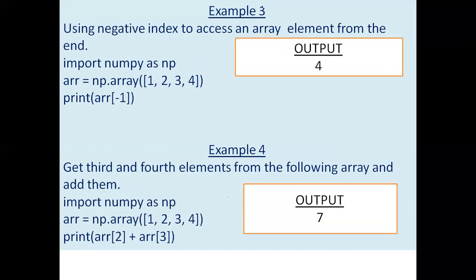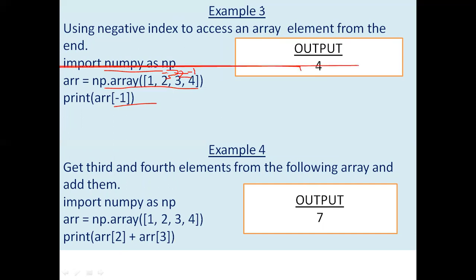Example 3: using negative index to access an array element from the end. We import NumPy, create the array by passing the list. Here we use arr[-1]. Minus 1 is the last element, minus 2 is second from last, minus 3 is third from last, and minus 4 is fourth from last. So for arr[-1], look at the output — the number is 4.